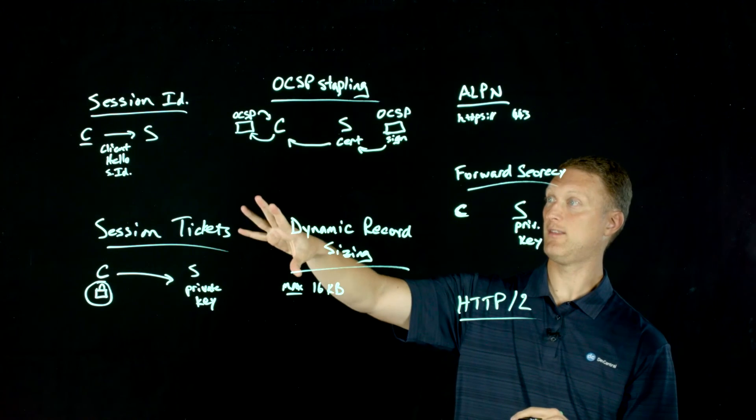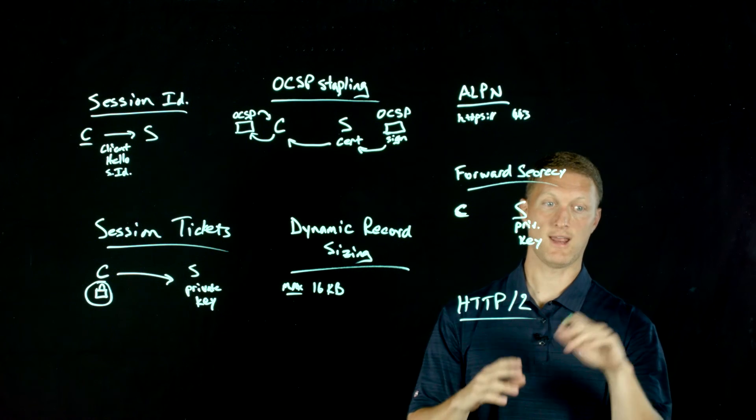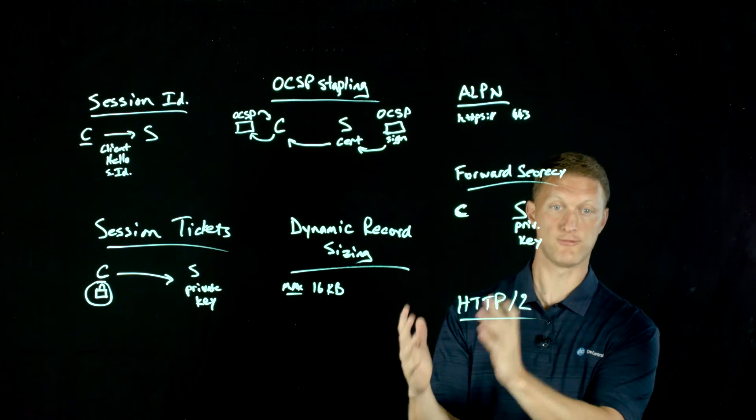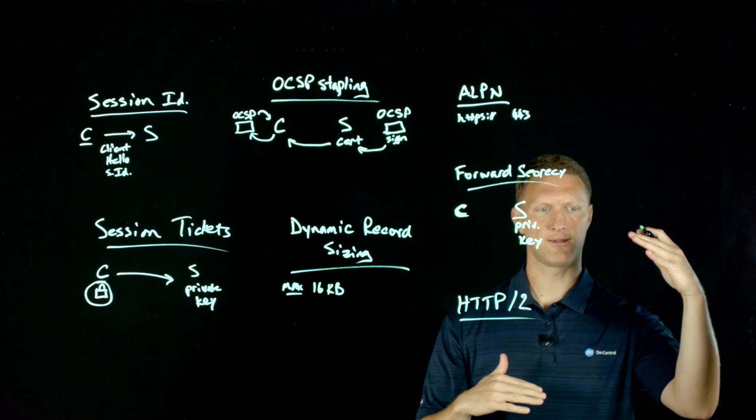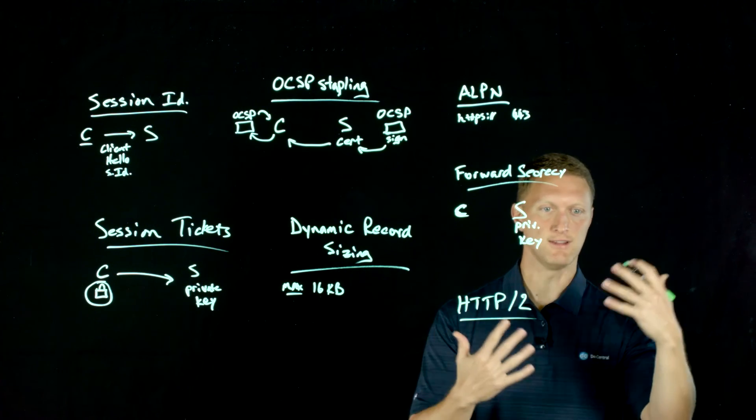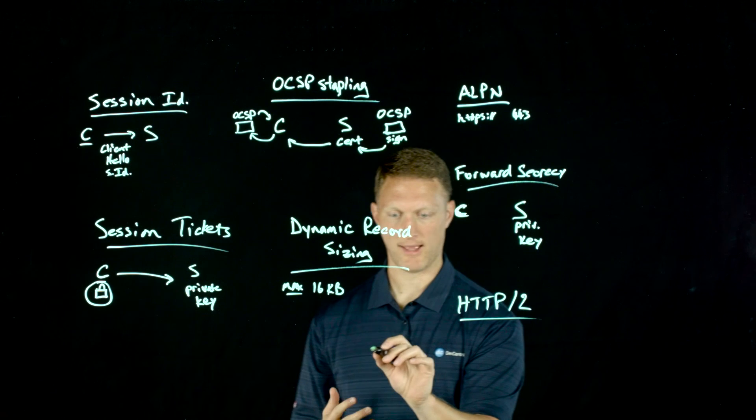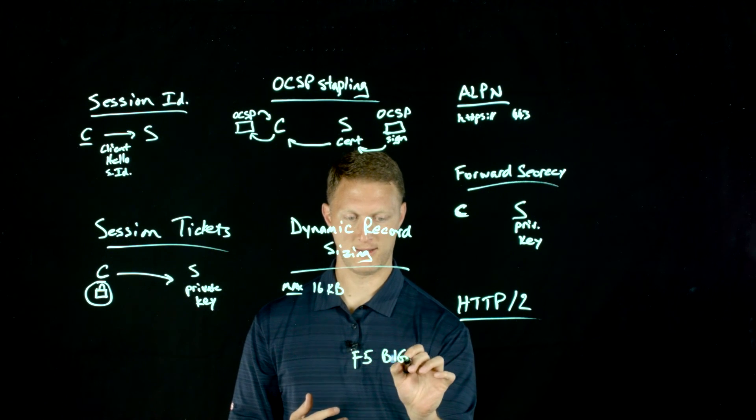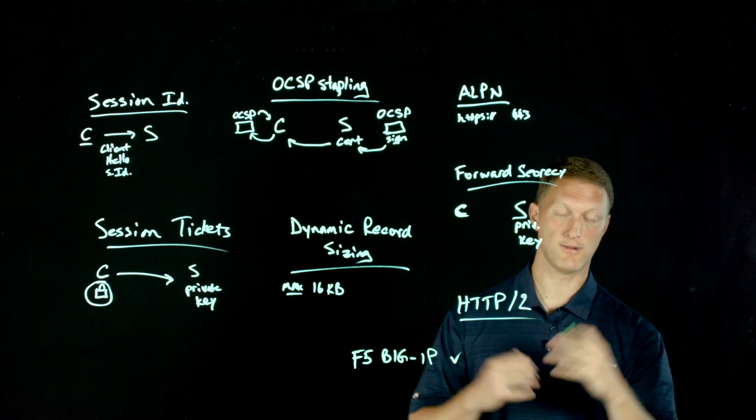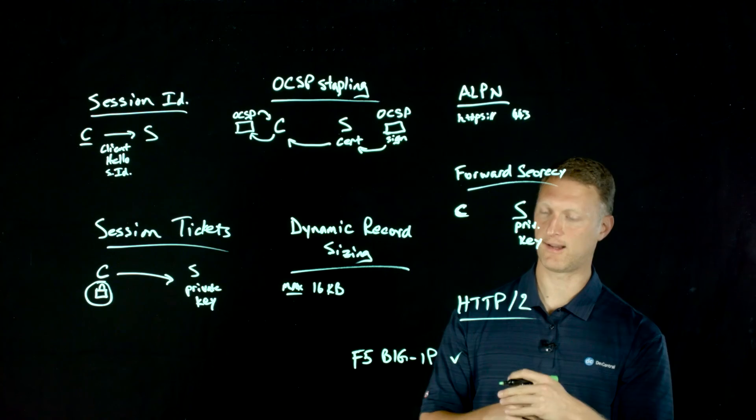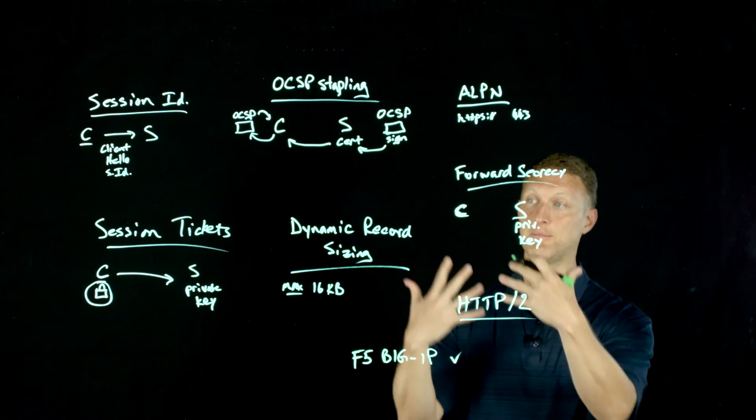So anyway, all of these things, all seven of these things, are what these guys have come together and said, if you will do this stuff, then you can have the security of TLS, but then you can also have the performance that you're really looking for because you don't want to sacrifice performance for security. And so they went through and they looked at several different application delivery controllers. They looked at different web application servers, that kind of thing. And sure enough, the F5 big IP, I'll just put a big old check mark next to it because what they did is they looked at several kind of industry leading web application providers and said, how do you score on each one of these? Because not everybody does all of this stuff. Not everybody even offers the capability to do all of this stuff. But as it turns out, the F5 big IP, you can do every single bit of this.